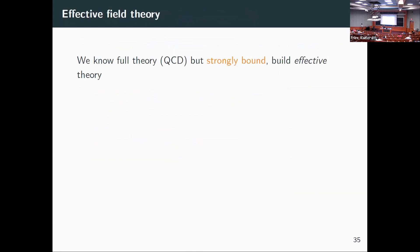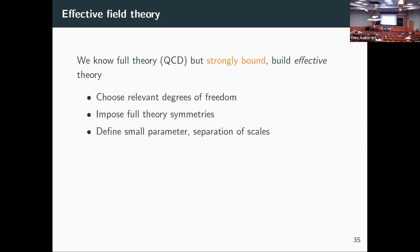Let me briefly walk through effective field theory and how we did this calculation. Beta decay is great because of the nuclear chart, but it's also hard because of strong interaction physics. Even though we know what the strong interaction physics is (it's QCD), we can't actually solve it for nucleons on paper. So we build an effective theory: choose the relevant degrees of freedom, impose the symmetries of the full theory, write down all consistent terms, and define a small expansion parameter — separation of scales.